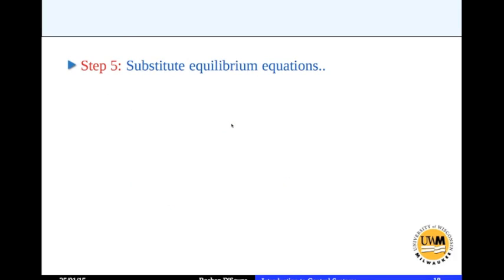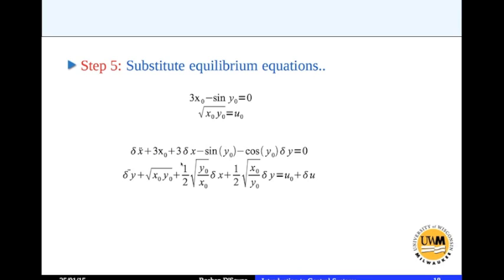And then step 5 is you substitute equilibrium equations. So what are equilibrium equations? 3x0 minus sin y0 equal to 0 root of x0 y0 equal to u0. These are equilibrium equations. And these are your perturbed equations with the linearized terms here. Now if you look 3x0 minus sin y0 equal to 0. You have 3x0 minus sin y0.